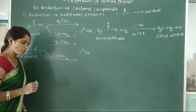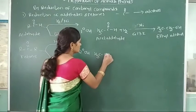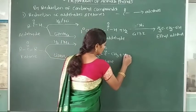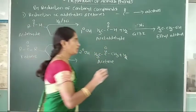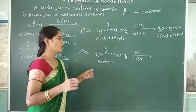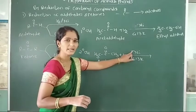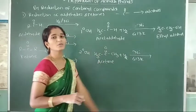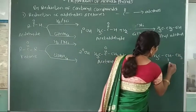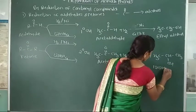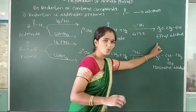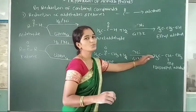Second example, ketone: acetone, CH3COCH3. This acetone is reduced with hydrogen in presence of nickel catalyst at higher temperature. Acetone is converted into secondary alcohol, that is isopropyl alcohol. Here aldehyde is converted into primary alcohol and ketone is converted into secondary alcohol.